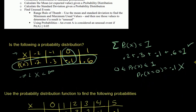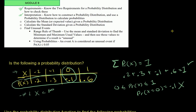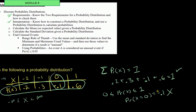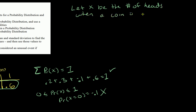Next is interpretation — how to construct a probability distribution function and use it to calculate probabilities. Let's work through an example: let X be the number of heads when a coin is flipped twice.